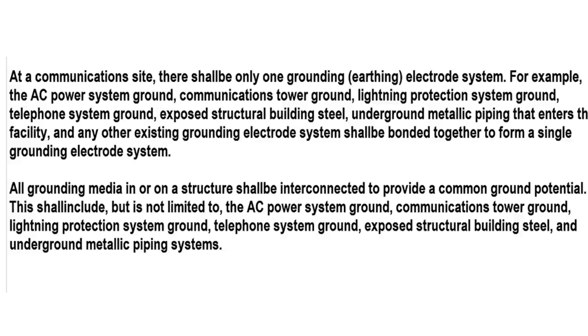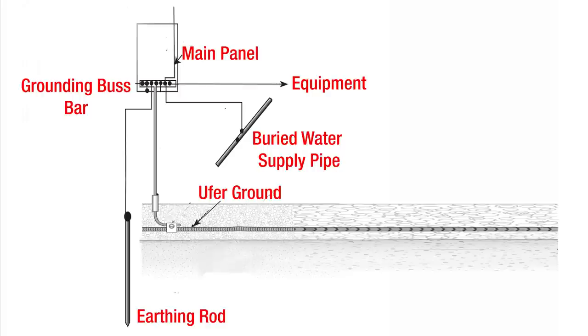This graphic from their work says that the earthing rod, ufer ground, or buried water pipe all connect to the grounding bus bar in the main panel, as does the equipment. So if it's an earthing rod, it goes straight to the panel, as does the equipment.